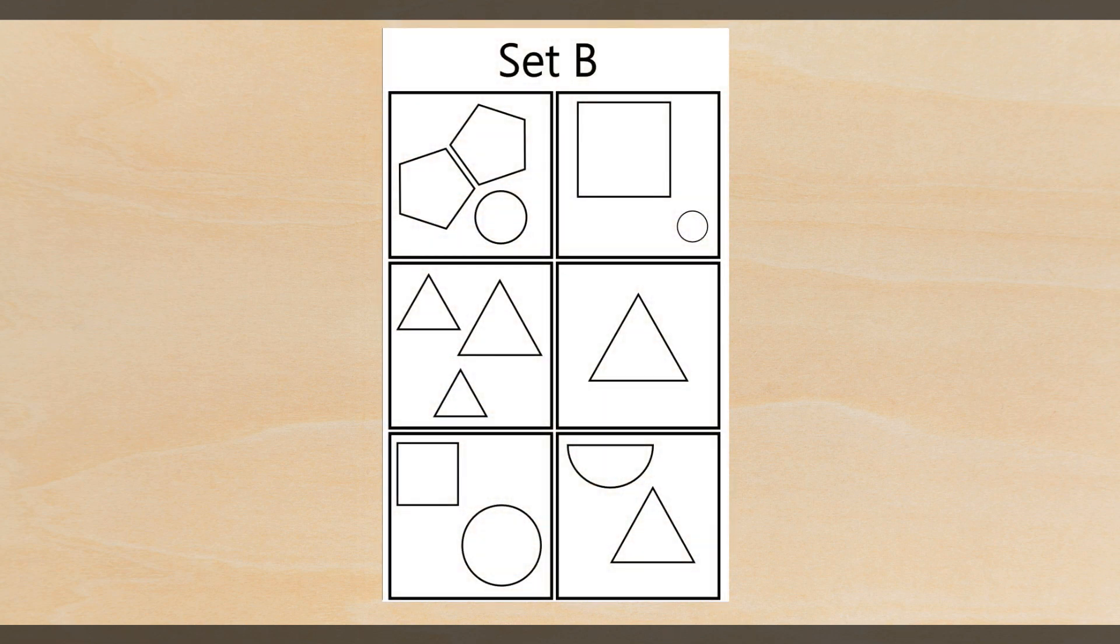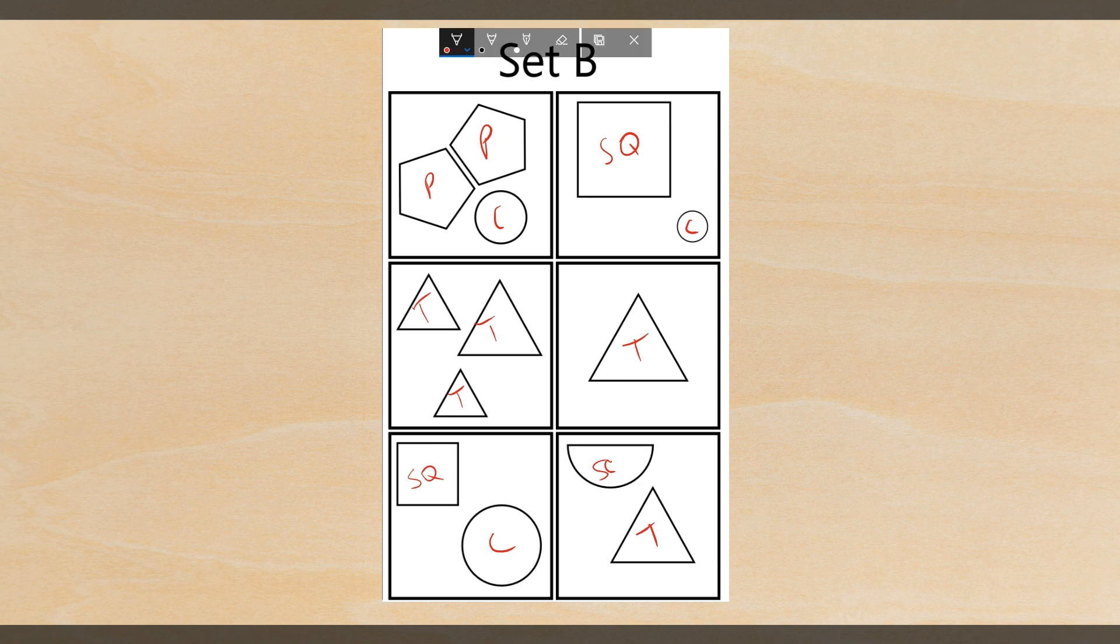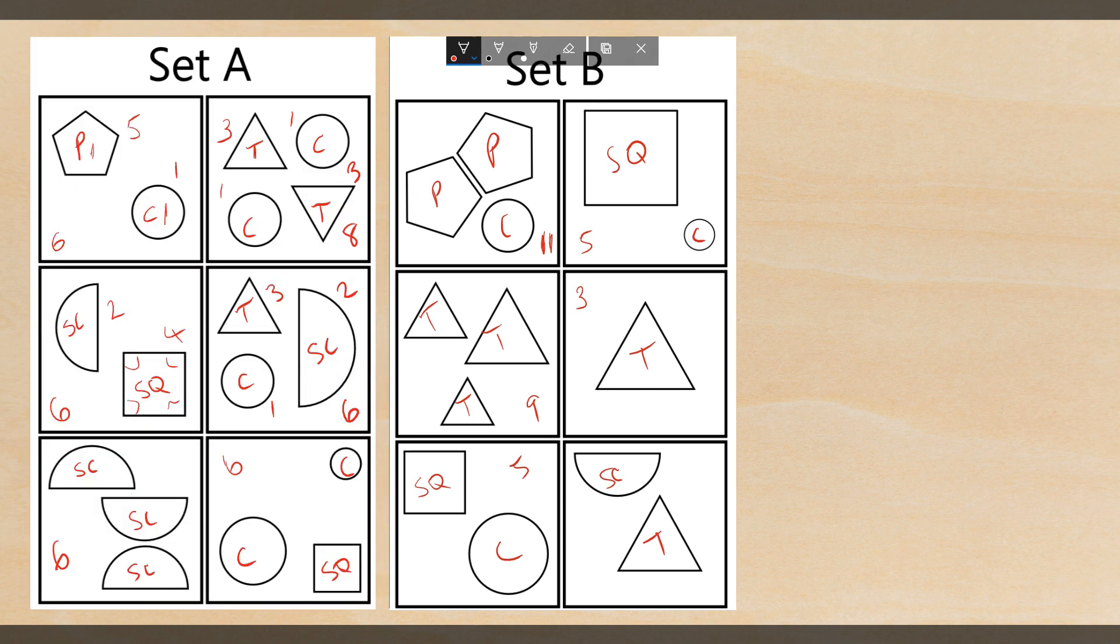So now I'm going to move to set B, and we're going to analyse all of these at once, so we have pentagon, pentagon, circle, square, circle, triangle, triangle. Circle, semi-circle, and triangle. So the number of sides, we have two lots of five is ten, plus one is eleven, we have four plus one is five, three, nine, five, and three plus two is five. So, something should have just become obvious. What we can see in this case is that in set A, the total number of sides is always even, it was either six or eight in one case. In set B however, this number always seems to be odd.